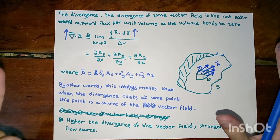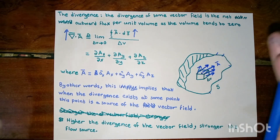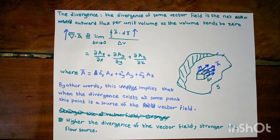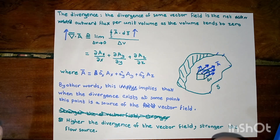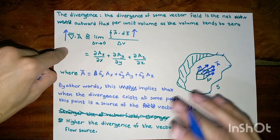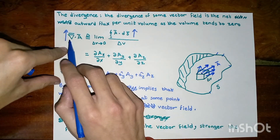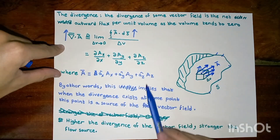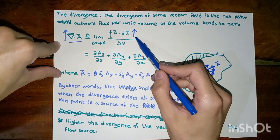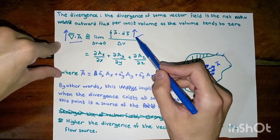To sum this all up, if we have a divergence at some point, this means that this point is itself a source of this vector field. And let us re-look at this formula: if we increase the divergence of the vector field, the surface integral is going to increase.